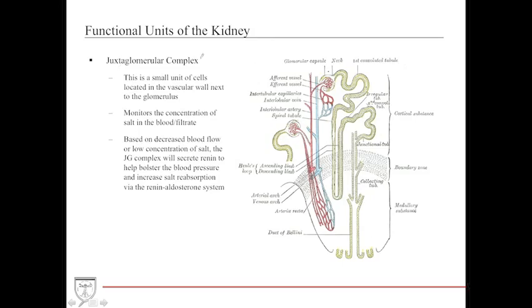The juxtaglomerular complex is the onset of the RAS system — a small unit of cells in the vascular wall next to the glomerulus. It monitors sodium concentration and the amount of blood flow passing through. Based on these two factors, the JG complex produces renin, which leads to angiotensin 1, then angiotensin 2 in the lungs, then aldosterone in the adrenal glands, which goes back to the collecting tubule to help manage blood pressure and water balance.